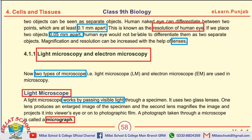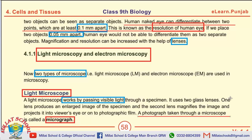The next question is: what is the resolution of the human eye? The human naked eye can differentiate between two points which are at least 0.1 millimeter apart — this is known as the resolution of the human eye. The next question is: what is a micrograph? A micrograph is the photograph taken through a microscope. There are some MCQs. The first one is about the resolution of the human eye, and that is 0.1 millimeter.